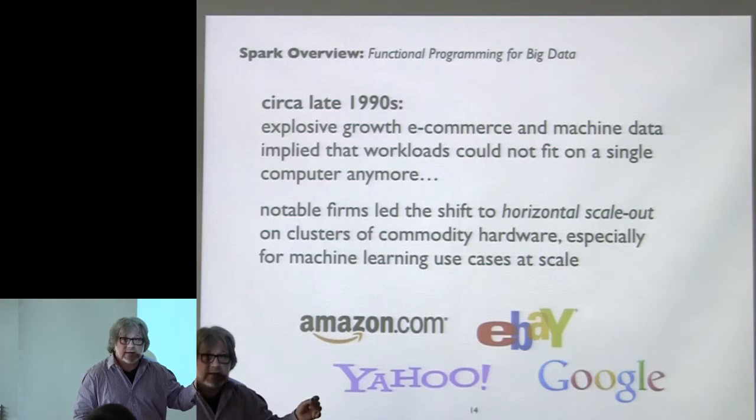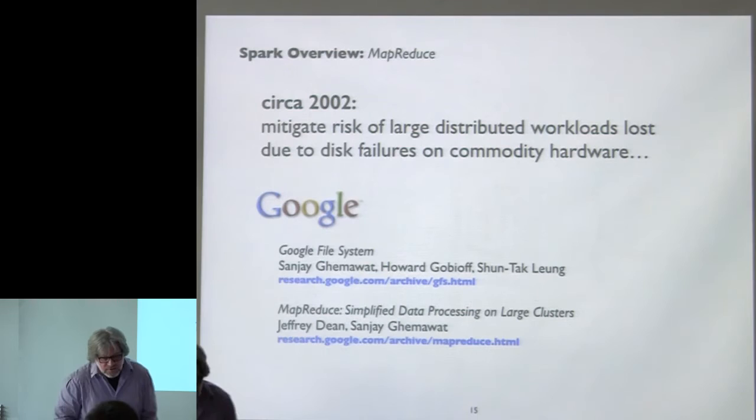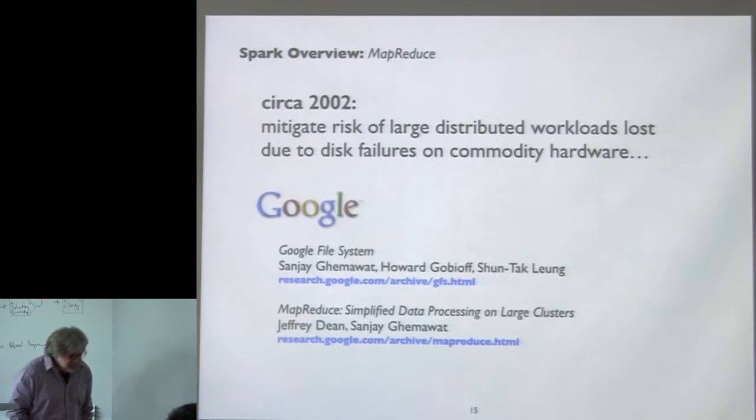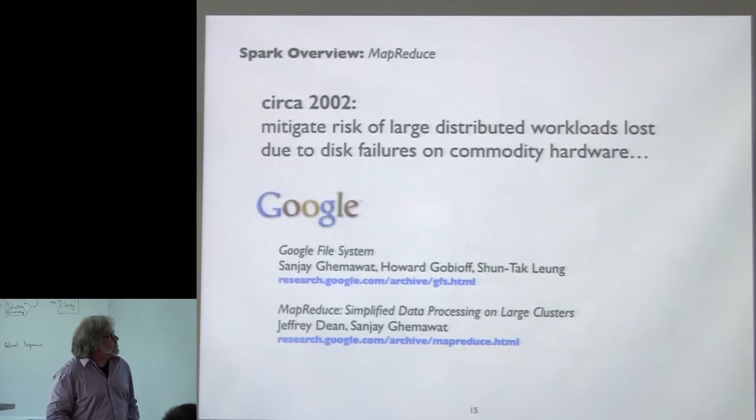Applying machine learning at scale to create data products that would enhance the web apps created a kind of flywheel — a virtuous cycle where more and more data led to augmenting better and better recommender systems, hopefully making the Amazon and eBay experience better. That's really where big data started — this spike in the usage of machine data, primarily for e-commerce. A few years later, Google was doing this same type of work with Linux servers and horizontal scale-out, but doing much more complex workloads.